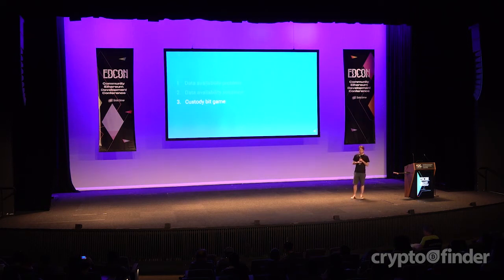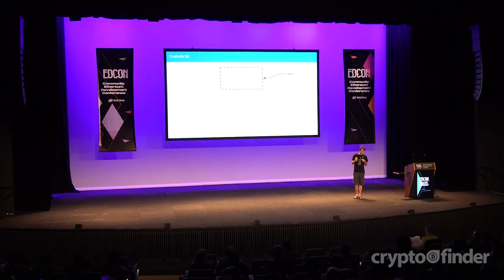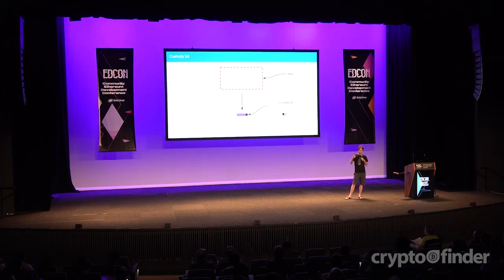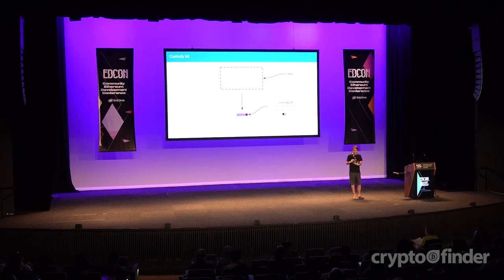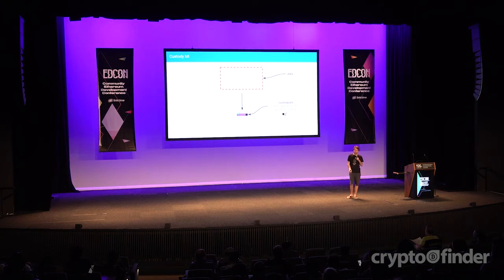Now to the most interesting bit: the custody bit game. How do we enhance these attestations by adding one single bit such that if you don't download the data, you'll be caught half the time? To reframe the problem more abstractly: you have the data, you have the data root, a signature — both form an attestation — and you want a so-called custody bit, which is a crypto-economic construction. It's not purely cryptographic; you don't know cryptographically with certainty that the person downloaded the data. Instead, with probability one-half they'll only get the custody bit right if they guessed, and we will know about this in the near future.